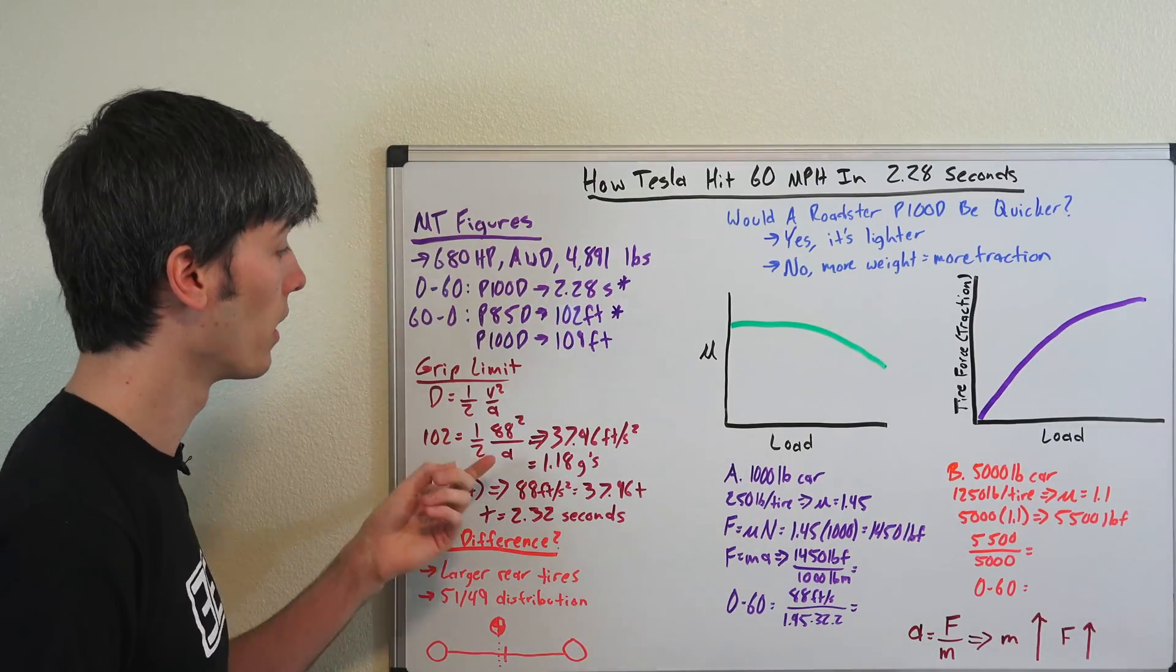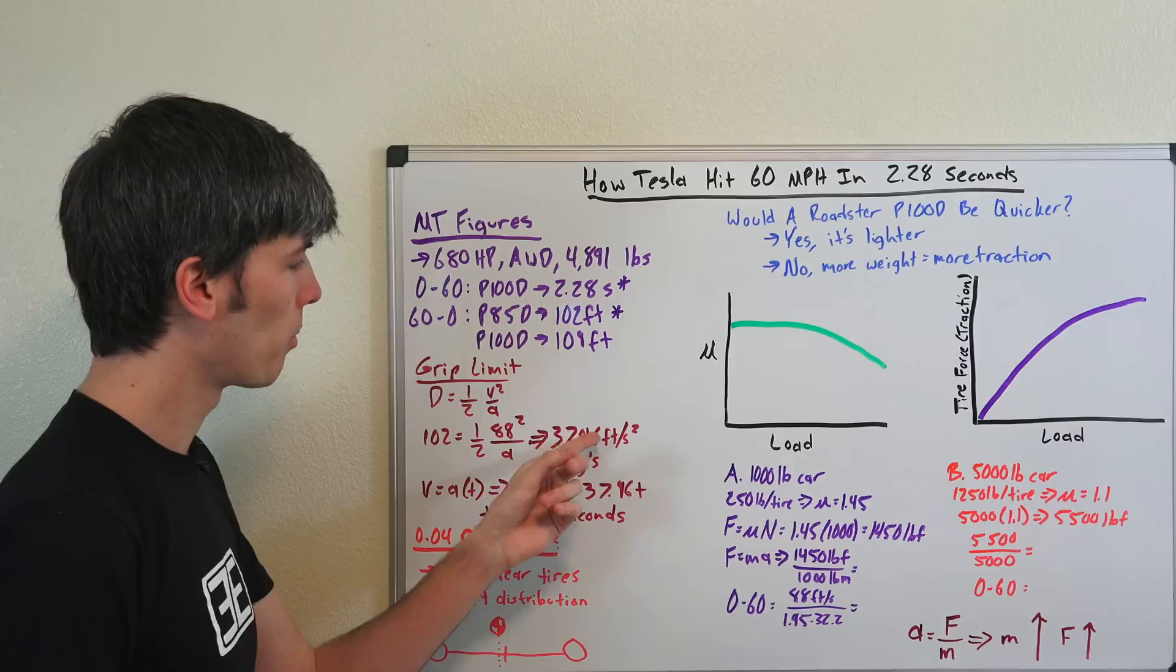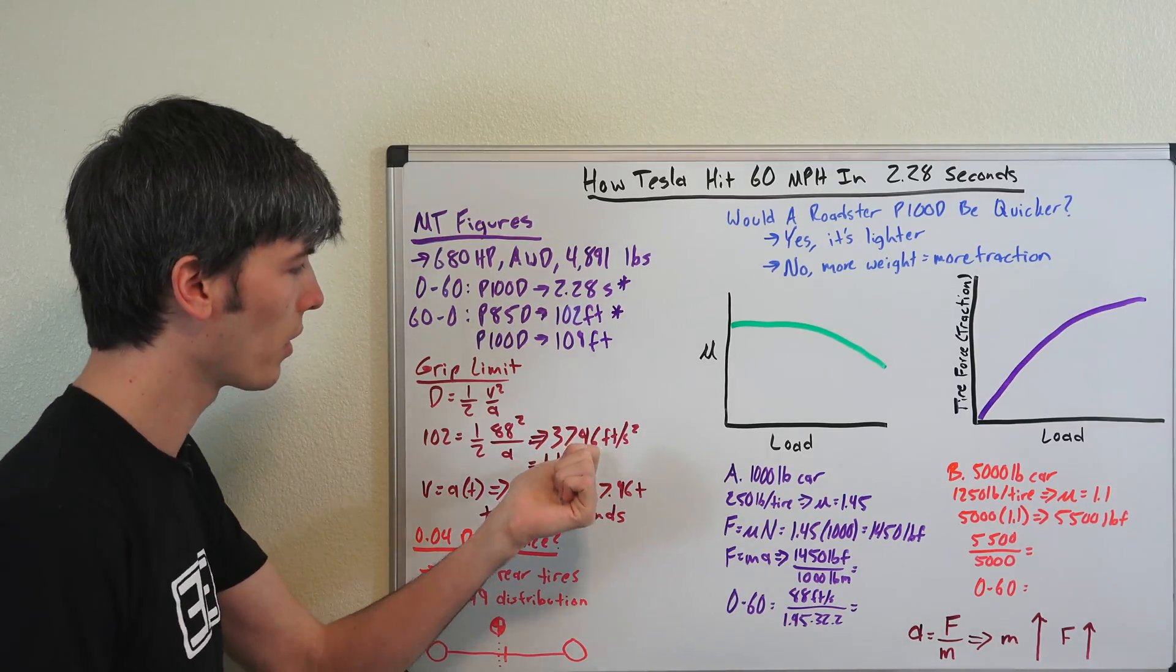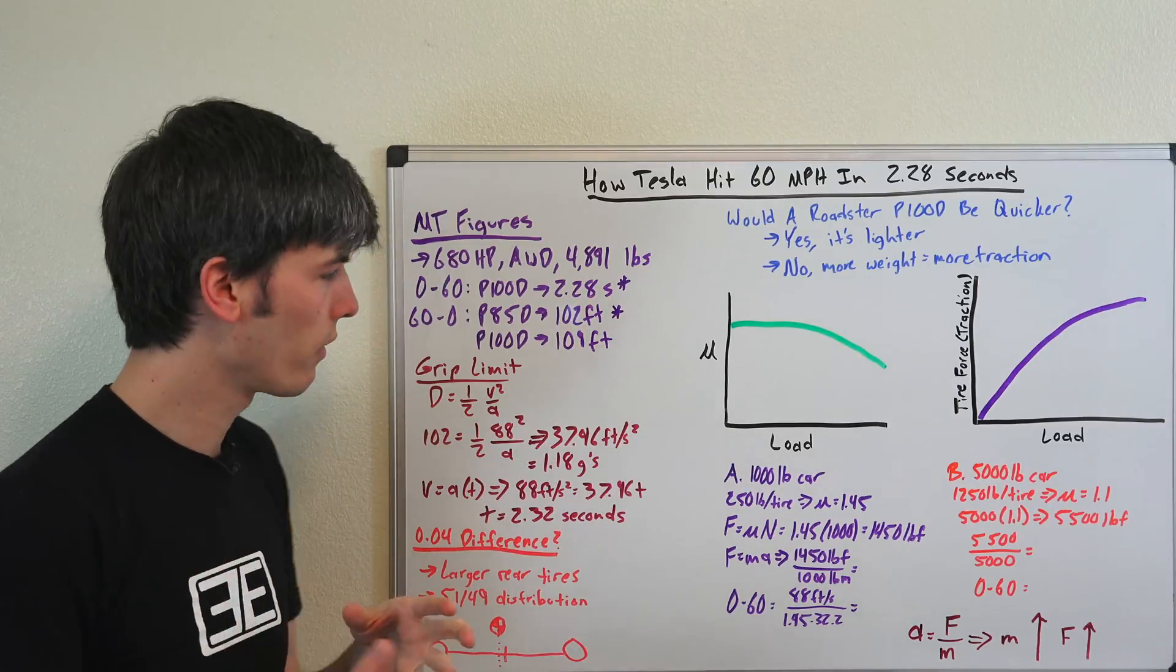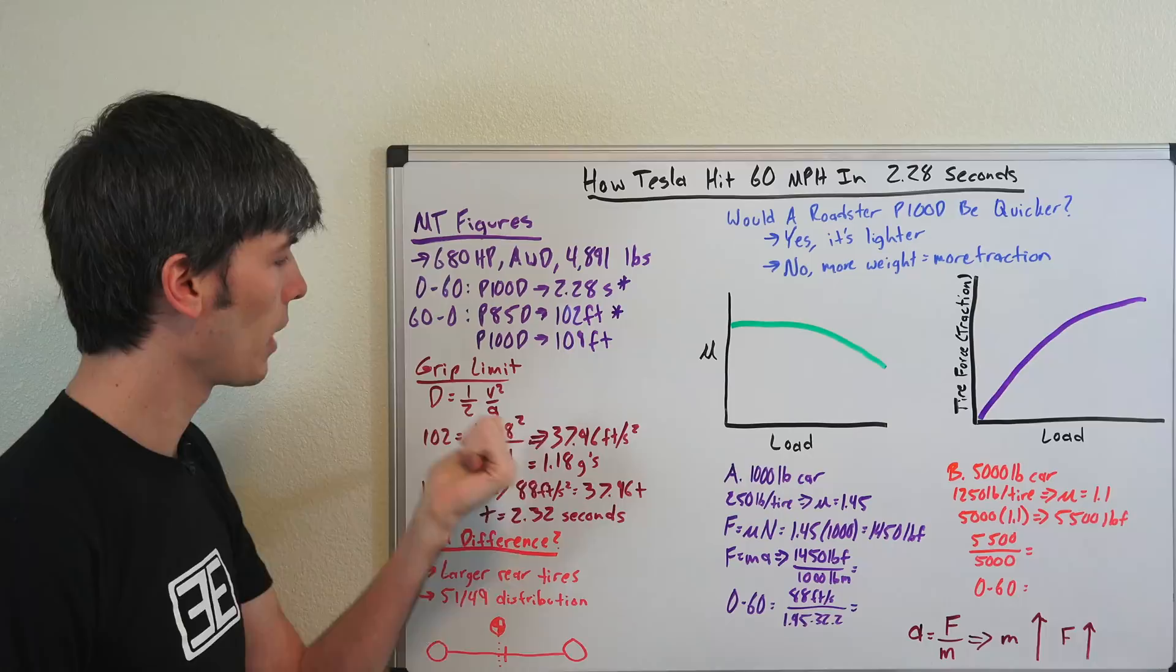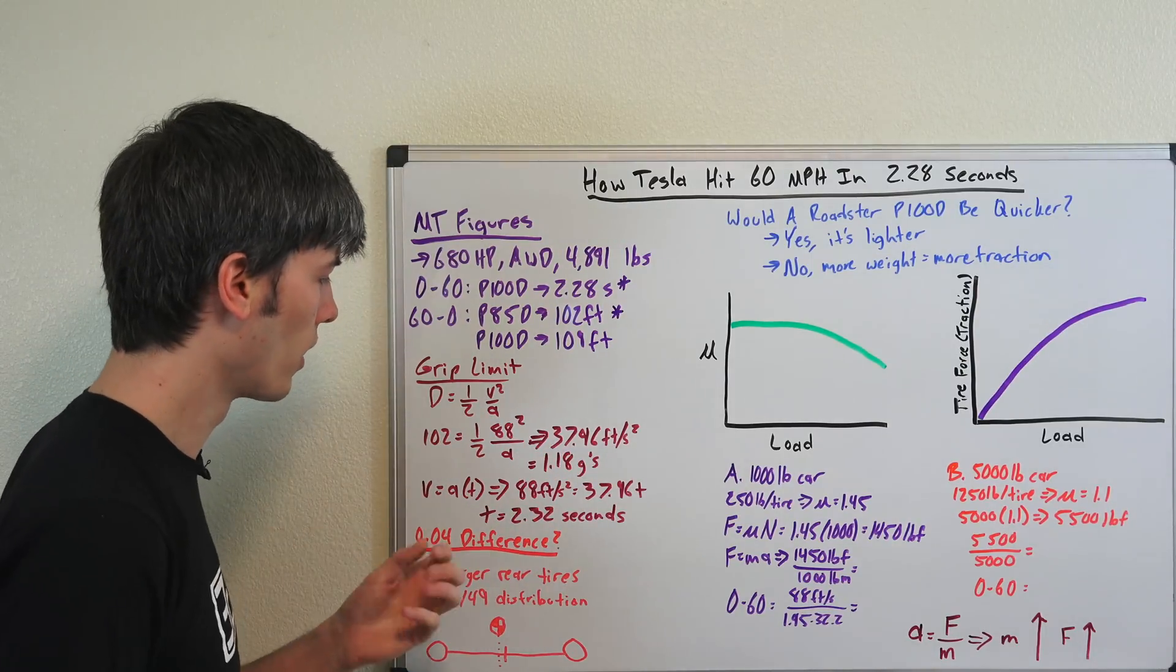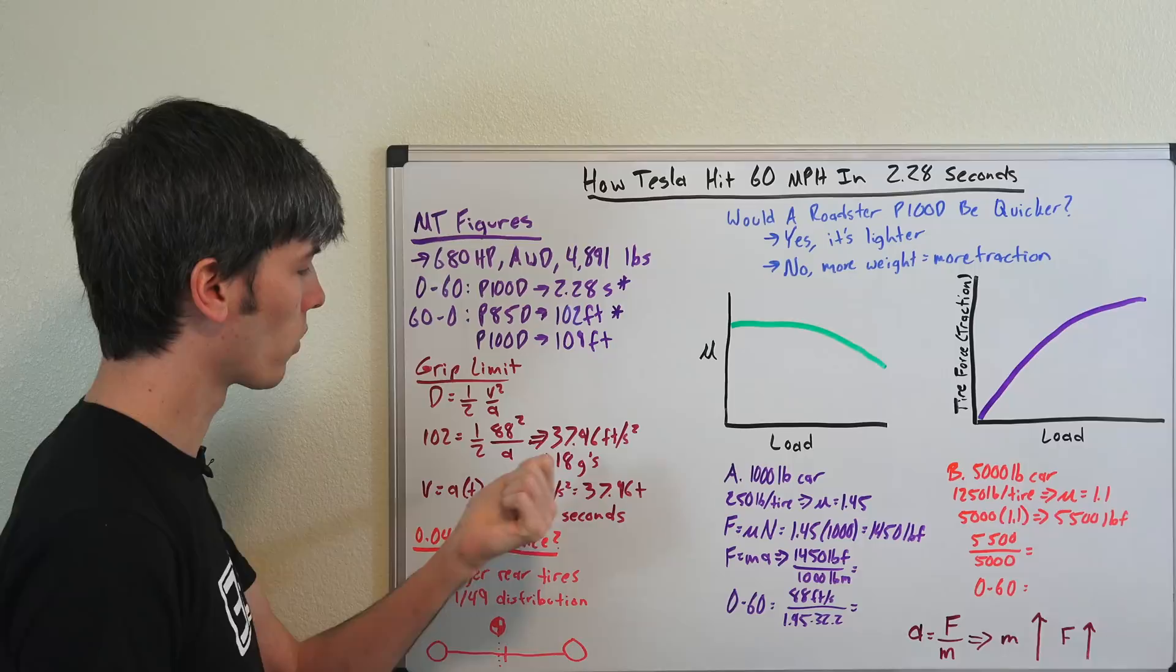So 88 feet per second equals 60 miles per hour divided by a. We solve for a, a gives us 37.96 feet per second squared. This number if you divide that by 32.2, that's the acceleration of gravity on planet Earth, that gives you 1.18 G. So this car is able to decelerate based on a stopping distance of 102 feet at 1.18 G. So I would assume it would also be able to accelerate if it had enough power based on the grip of the tires.